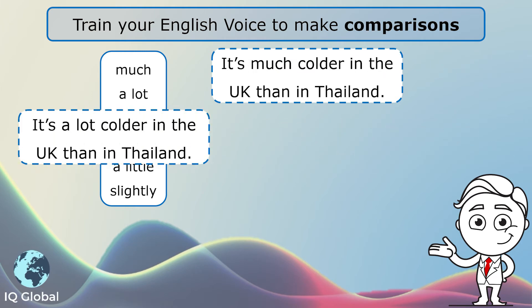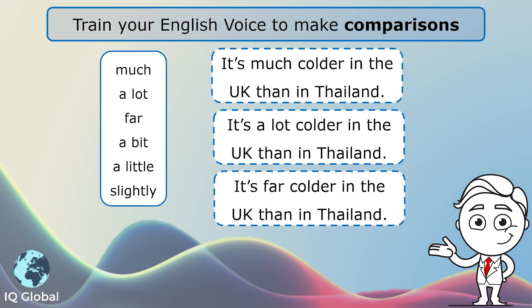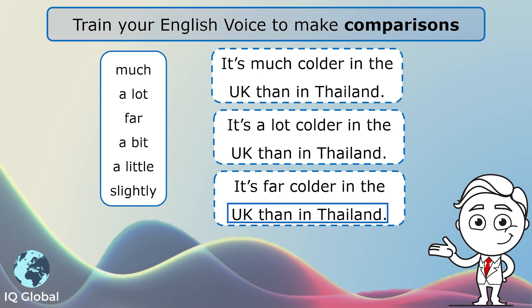Sentence two. It's a lot colder in the UK than in Thailand. Here I've used the word 'a lot' to emphasize that it is colder. So it is not just colder, it is a lot colder. That sentence has more emphasis. And sentence three. It's far colder in the UK than in Thailand. So here I am using the word 'far' to emphasize that comparison.